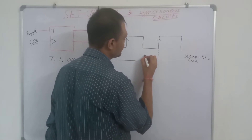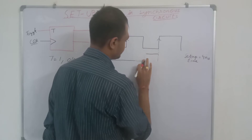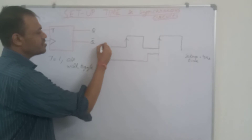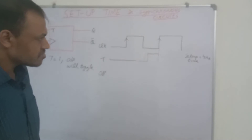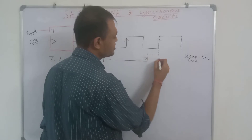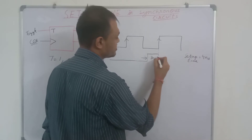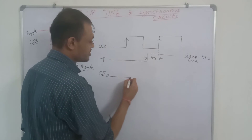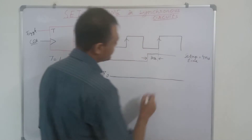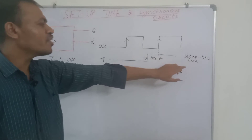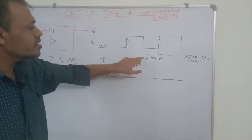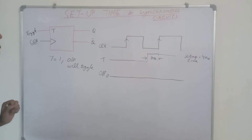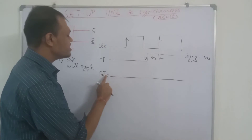If T gets equal to 1 here — this is the T input, this is the clock input, and this is our output wave. If T gets equal to 1 here and this time is only 3 nanoseconds, then our output will not toggle. Suppose output was 0; then output will remain 0. The output will not toggle because the setup time was 4 nanoseconds and the T input became 1 just 3 nanoseconds before this positive edge was applied. So the output will remain 0.